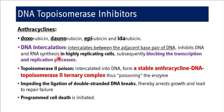As a topoisomerase 2 poison, the anthracycline intercalates into DNA and forms a stable anthracycline-DNA-topoisomerase 2 ternary complex. This poisons the topoisomerase 2 enzyme by forming a stable, permanent complex. It impedes the ligation of double-stranded DNA breaks, thereby arresting growth and leading to repair failure and initiation of programmed cell death.